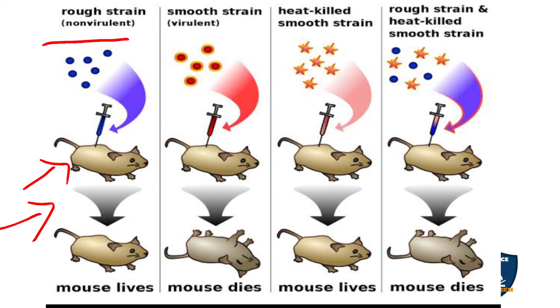The rat injected with the rough (R) strain survived. Next, the smooth strain (S type), which is virulent, was injected into the rat.